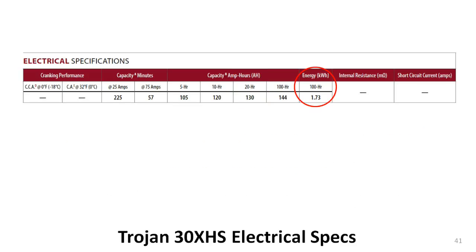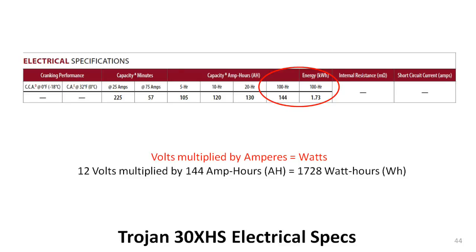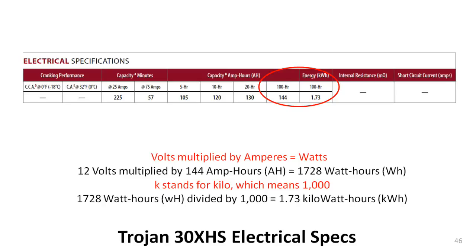The column labeled energy kWh could also be labeled power kWh because it deals with watts — more specifically, kilowatts — and is based on a 100-hour discharge time. Multiplying 12 volts times the amp-hour rating of 144 gives the watt-hour rating of 1,728. Because kilo means 1,000, you can divide 1,728 watt-hours by 1,000 to get the number of kilowatt-hours: 1.73. It's just another way to look at the same battery capacity — one way expressed as amp-hours, and the second as kilowatt-hours.